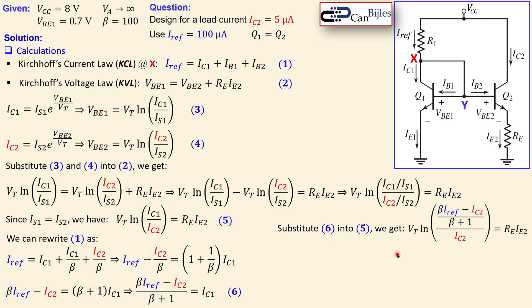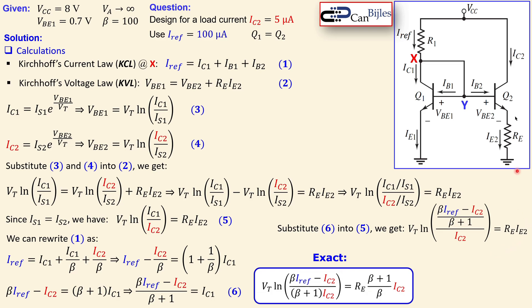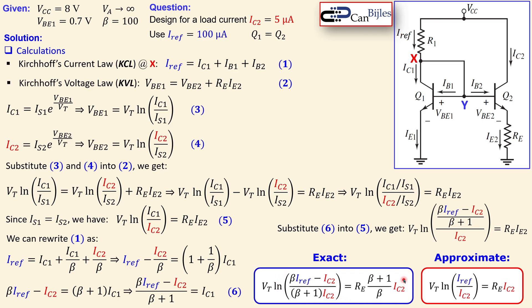After substitution, we get a more exact expression. To write IC2 explicitly, we also rewrite the emitter current IE2 = (β + 1)/β · IC2. This gives us the full exact expression. There is also an approximate expression for faster solutions: the term (β + 1)/β is approximately 1 since β is large (e.g., 100 or 200), so RE · IC2 appears on the right-hand side.